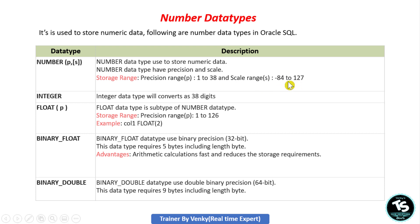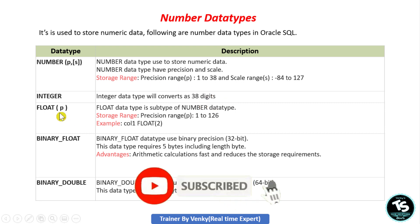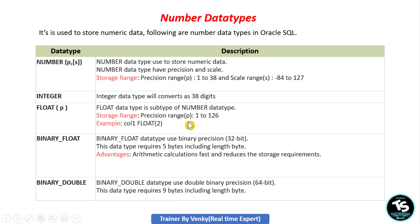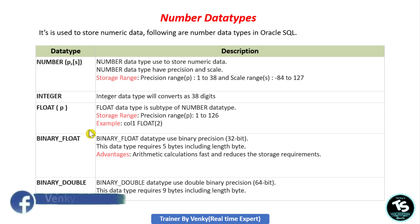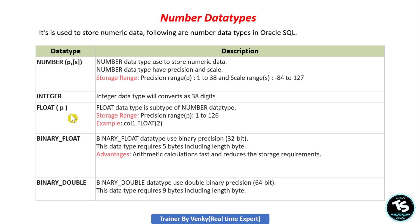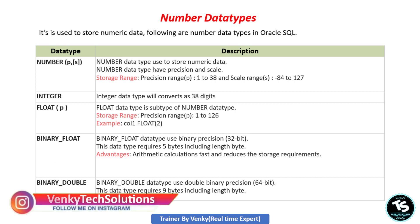If you declare INTEGER data type, Oracle will automatically convert it to NUMBER with 38 digits. Next is FLOAT data type. FLOAT is a subtype of NUMBER, and its precision range is 1 to 126. For example, if you want to insert more than 38 digits of numeric data, by that time you should use the FLOAT data type, since its range is 1 to 126.